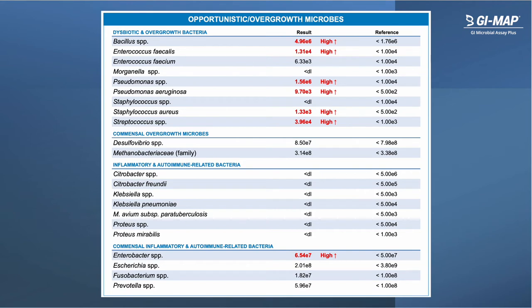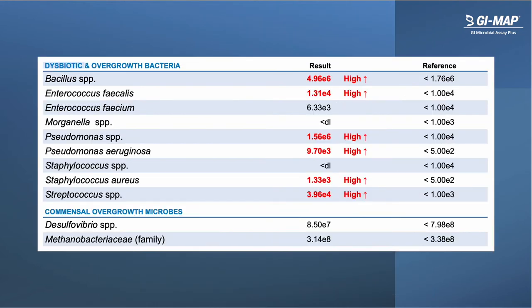Moving on to page three, the top section includes opportunistic and overgrowth microbes that are commonly elevated in patients who are symptomatic. The first section includes dysbiotic and overgrowth bacteria — bacteria commonly elevated in conditions such as hypochlorhydria, pancreatic dysfunction, food sensitivities, food intolerances, irritable bowel syndrome, and small intestinal bacterial overgrowth. There is also a section titled commensal overgrowth microbes, which tend to be overgrown under similar conditions but are present in virtually everyone, so they're not considered out of balance until they're elevated.